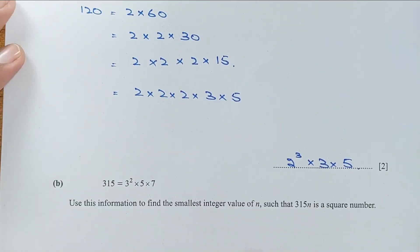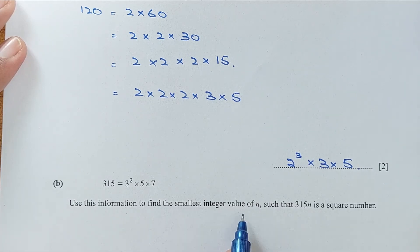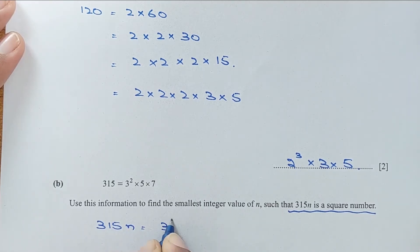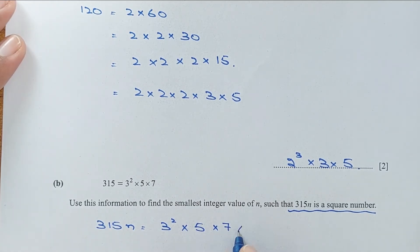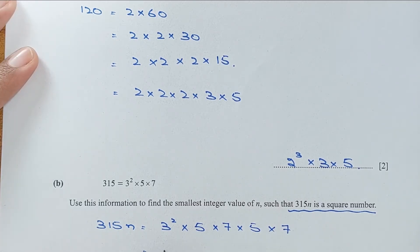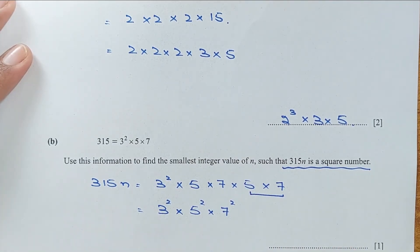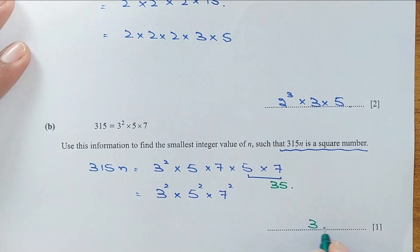For part B, 315 is given as a prime factorization. Use this to find the smallest integer value of n such that 315 times n is a square number. 315 equals 3 squared times 5 times 7. To make all powers even, we multiply by 5 and 7. So n equals 5 times 7 which is 35, making the product 3² × 5² × 7², a perfect square.